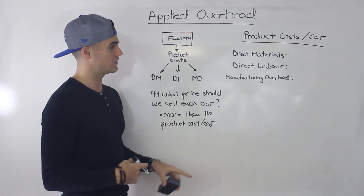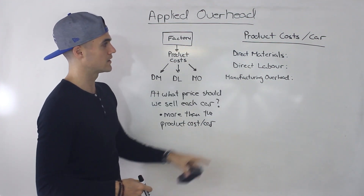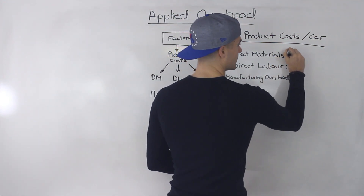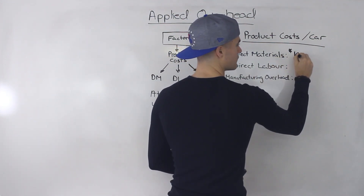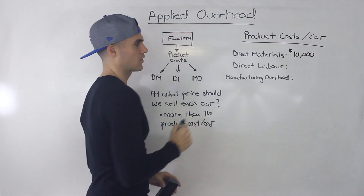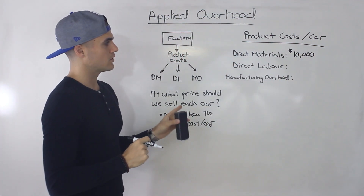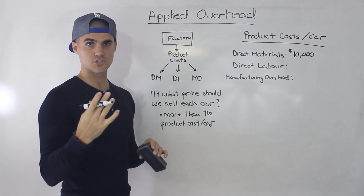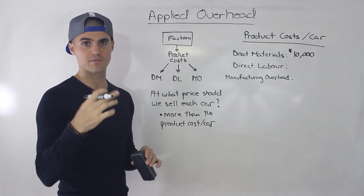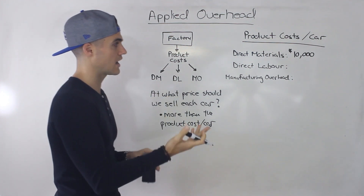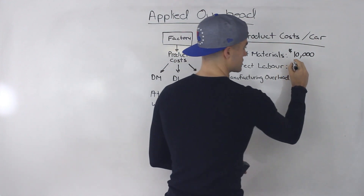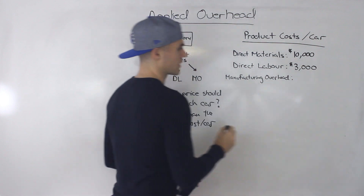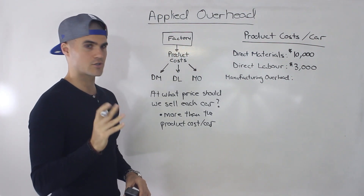Let's fill in some numbers. Direct materials — let's say it takes $10,000 of materials per car. Direct labor — let's say it takes 100 hours of labor to make each car, and we pay $30 per hour. So 30 times 100 gives us $3,000 of direct labor per car.